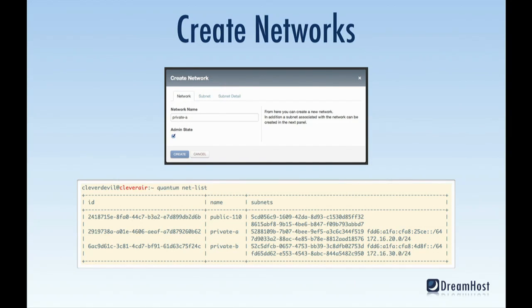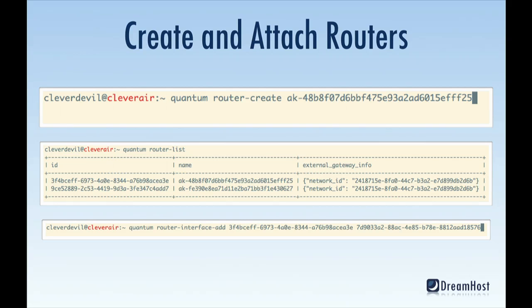In the user interface, you simply give a network a name, type in a subnet, and click Create. I'm using the standard OpenStack Networking client Quantum to read out the networks — you can see three networks: the public network provided to every DreamCompute customer, and the two private networks each with a v4 and a v6 subnet. Next, I'll create routers using the Quantum command-line client with `quantum router-create`, giving each a name, then `quantum router-interface-add` to connect a router to a particular subnet.